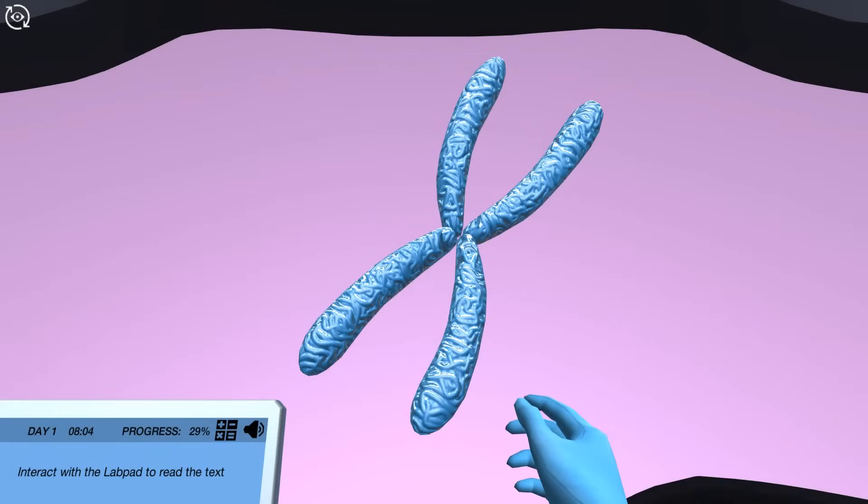When a cell is about to divide, chromatin condenses into chromosomes. Each chromosome consists of two duplicate chromatids.